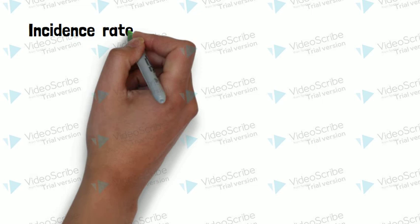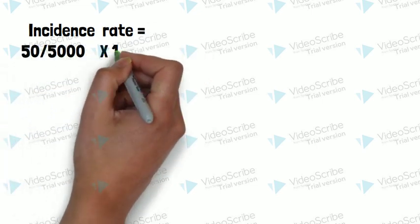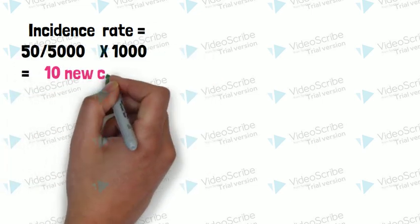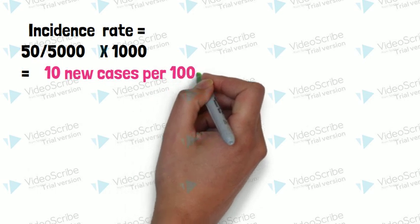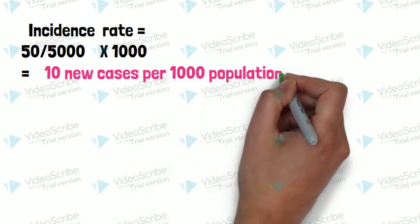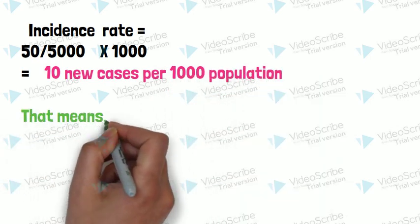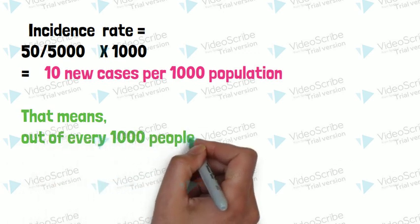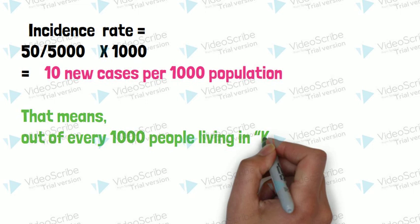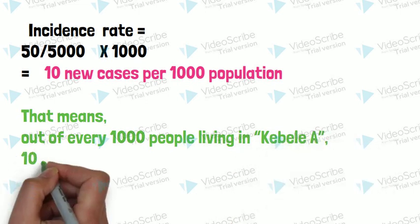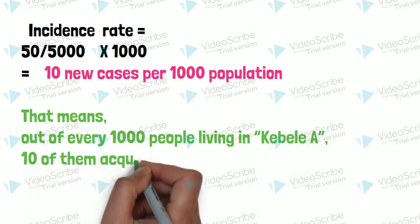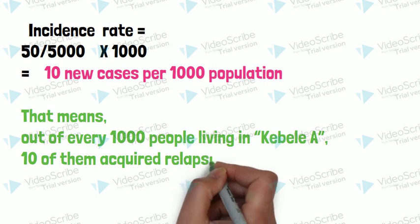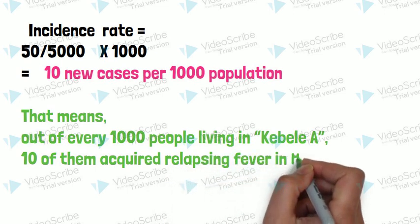This means, this conclusion is interpreted that out of every thousand people living in Kavali, 10 of them acquired relapsing fever. So every thousand people, 10 of them will be caught by relapsing fever.